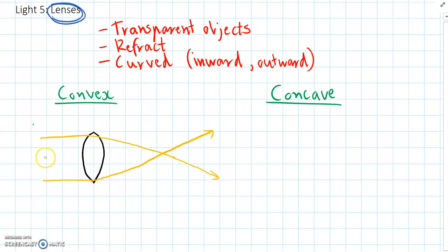But remember when light hits at 90 degrees it doesn't refract. So in the middle the light ray will continue straight through the lens. So here the light is refracted.